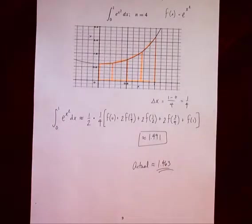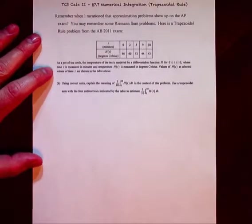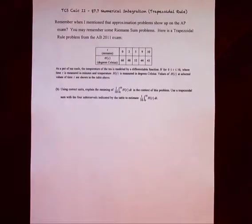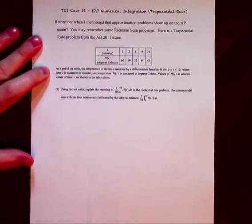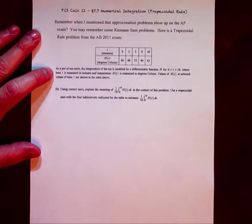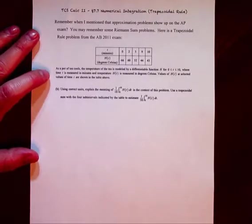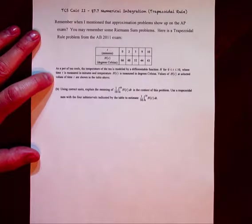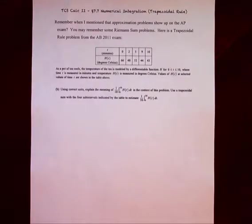Now we'll go over one AP-style problem. I don't usually introduce too many AP problems mid-year, but I want to emphasize that the trapezoidal rule does show up on the exam. The problem says: as a teapot cools, the temperature H of T is modeled by a differentiable function for T between 0 and 10, where T is in minutes and H(T) is in degrees Celsius. Values of H(T) at selected values of T are shown in the table.